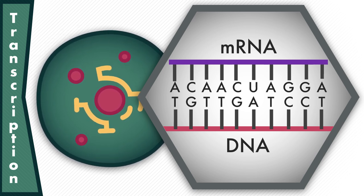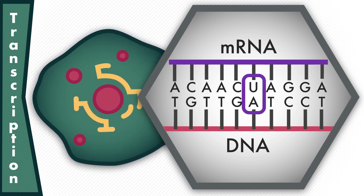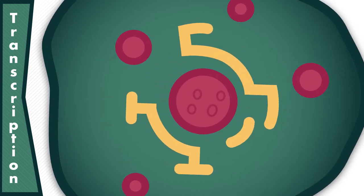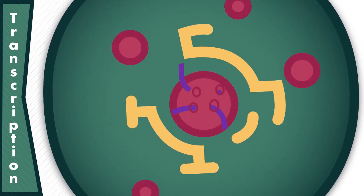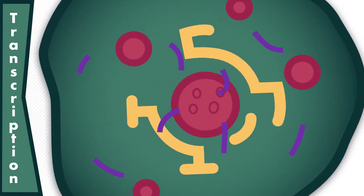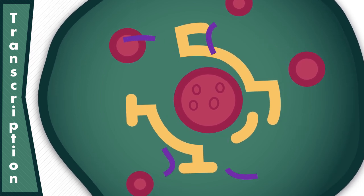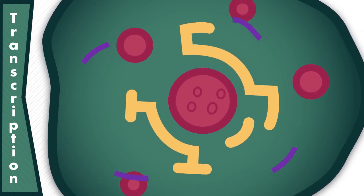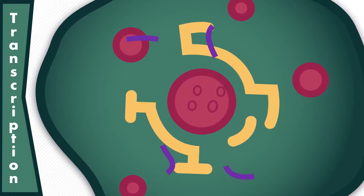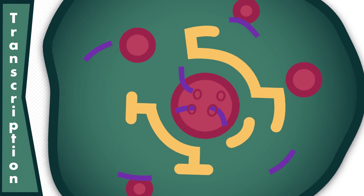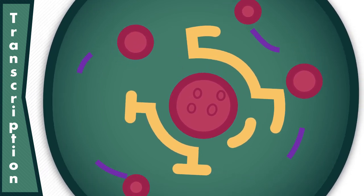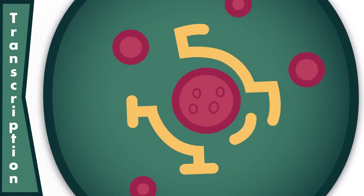On RNA, U pairs with A. The nucleus makes multiple copies of the mRNA from the DNA, depending on the amount needed by the cell, and sends all of the mRNA out of the nucleus and into the cytoplasm via tiny openings called nuclear pores.